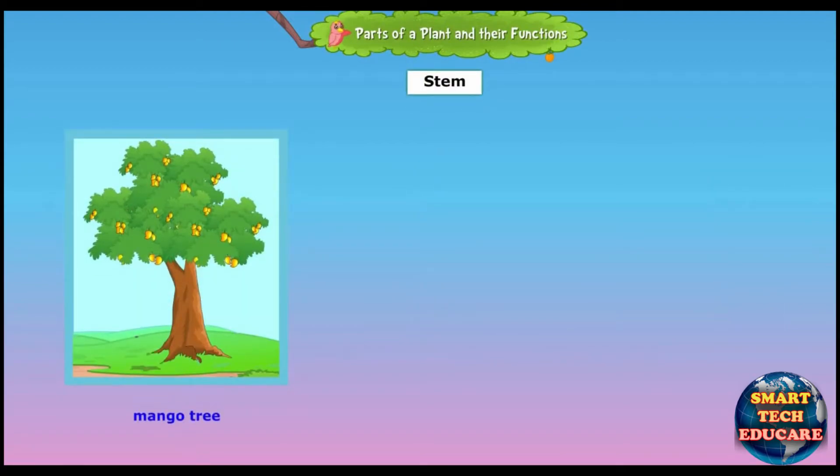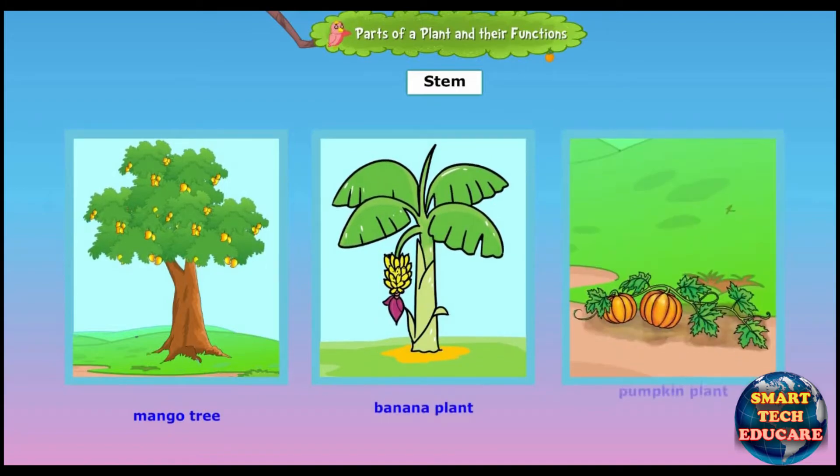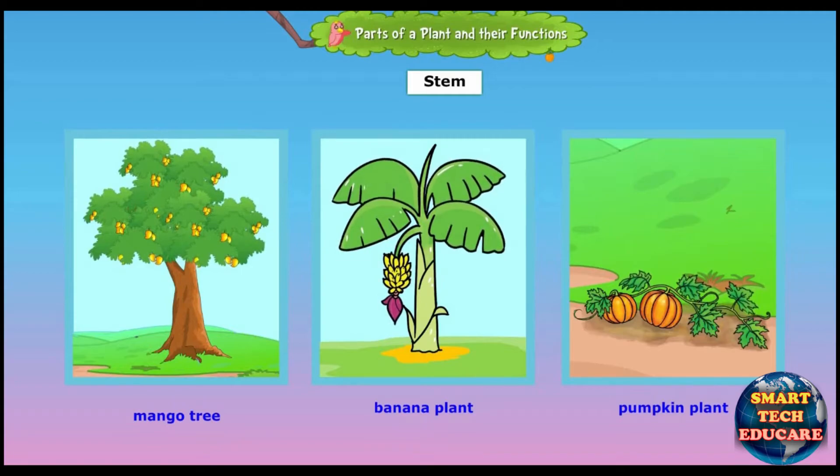The stem is the main part of the shoot system. It holds the plant upright. It supports the branches, leaves, buds, flowers and fruits.